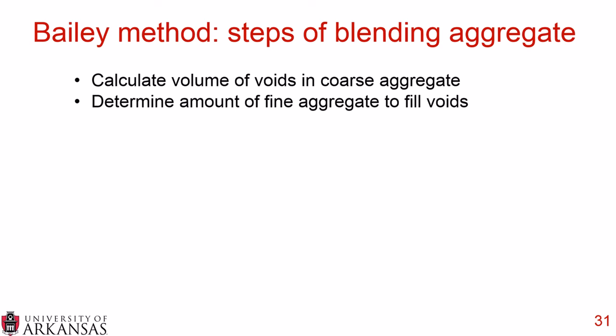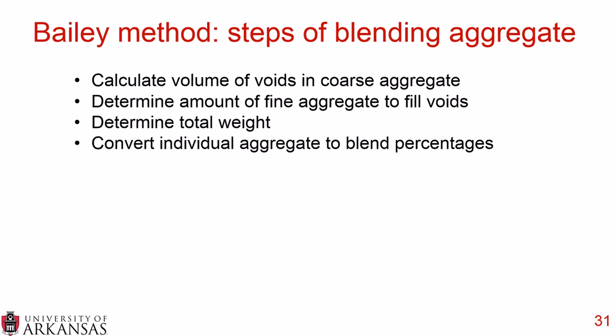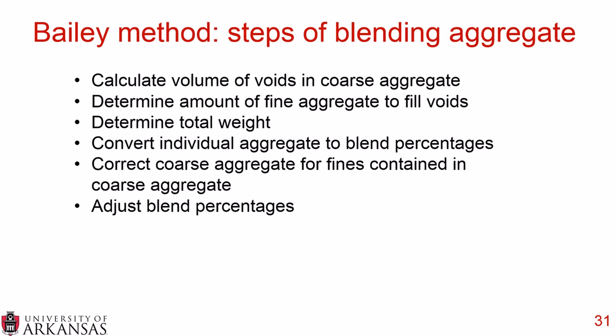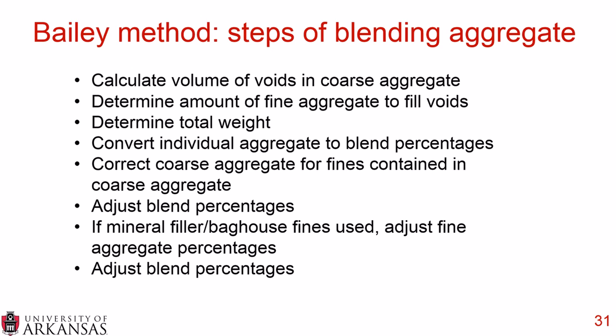The steps for blending aggregate in the Bailey method are: first, calculate the volume of the voids in the coarse aggregate; then determine the amount of fine aggregate needed to fill those voids; determine the total weight and convert individual aggregates into actual blend percentages. You then correct the coarse aggregate for the fines contained within the coarse aggregate sample and adjust the blend percentages. If you're using mineral filler or baghouse fines, you adjust the fine aggregate percentages and then adjust the blend percentages a second time.